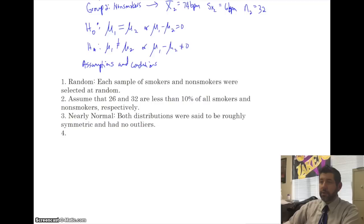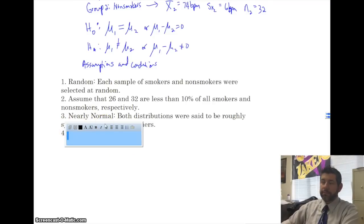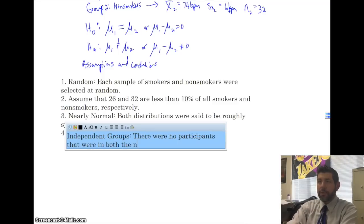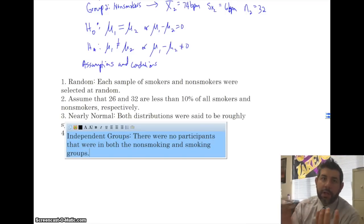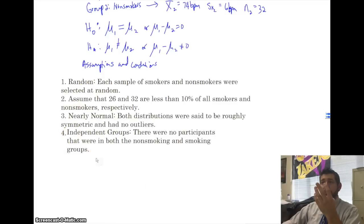And, finally, I do have a fourth one. Let's see if I can get this to work here. All right, well, I'll just write here. Our fourth one is that it is independent groups. And, it's pretty obvious that there were no participants that were in both the non-smoking and smoking groups. I mean, that's pretty obvious, right? If you're a non-smoker, then you're a non-smoker. You're not going to be in the smoking group. If you're a smoker, you're not going to be in the non-smoker group, and we're not really looking at people who quit. So, this is, it's pretty clear it's independent. Now that we have our four assumptions and conditions cleared out, we're going to go into our mechanics.